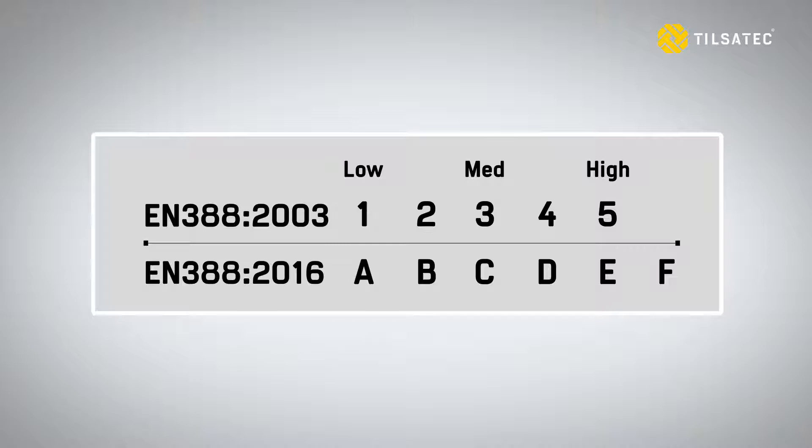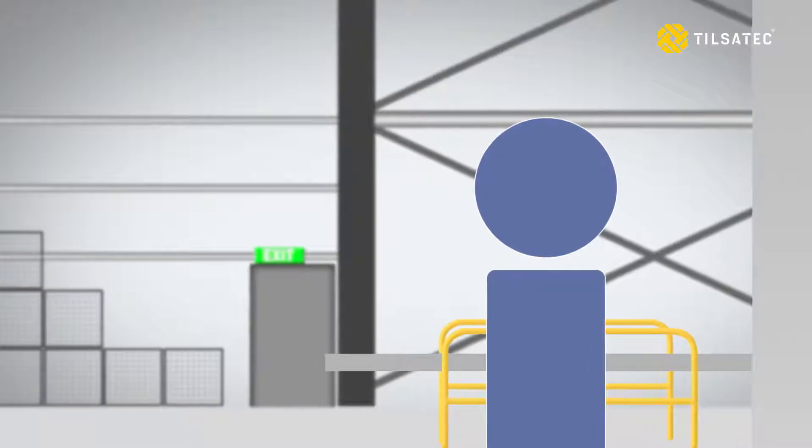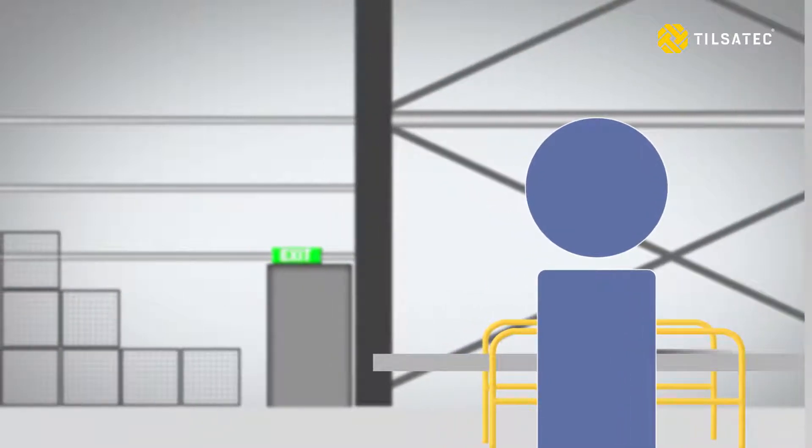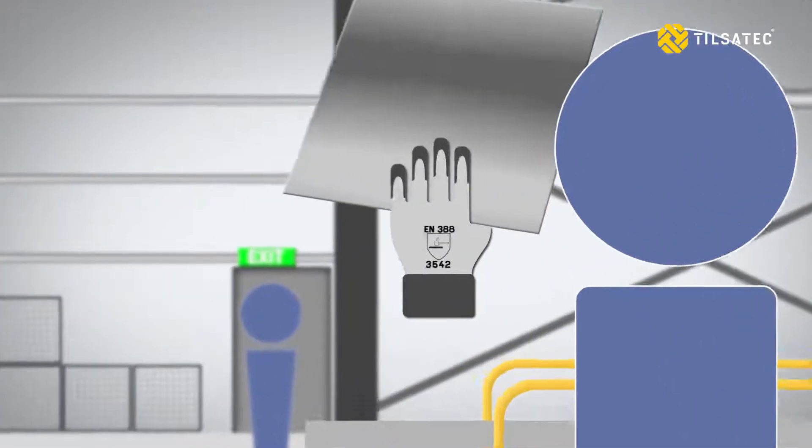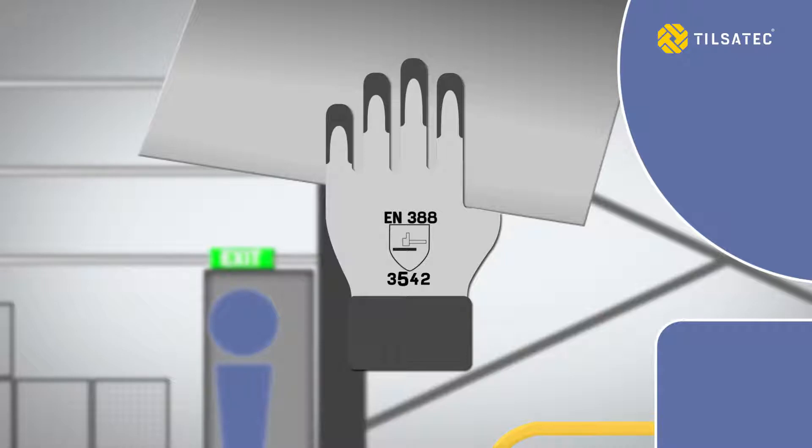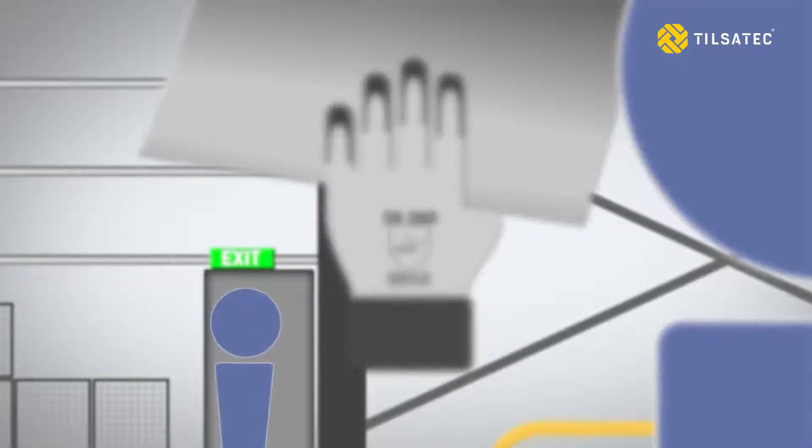Any organization that has had a mandate for minimum cut level 5 protection on site may be finding that under the new 2016 standard, gloves previously rated cut level 5 are now in fact a level C, and in some cases even a B.